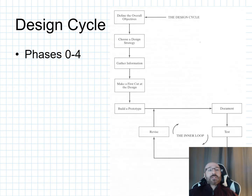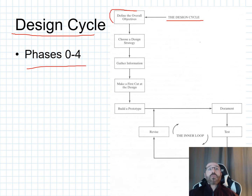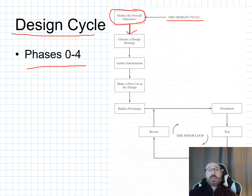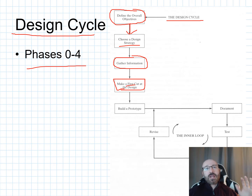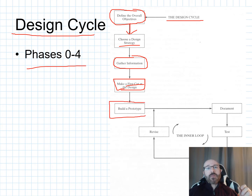This leads us into the design cycle, concentrating on phases zero through four. First, define the overall objectives. Then choose a strategy, and gather all required information. From there, make a first cut at the design — brainstorming sessions, listing different options — and take a first cut at how you're going to design it. From one of those ideas, you can build a physical prototype, which in our class might be a model built within SolidWorks.